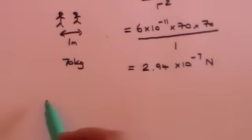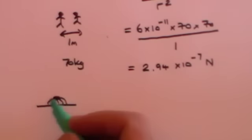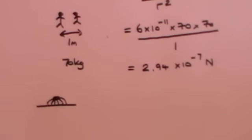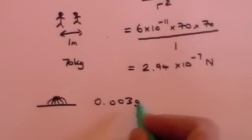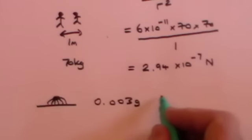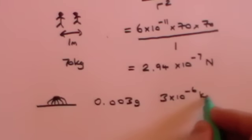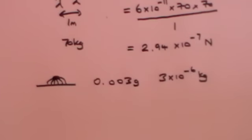I want you to think about an ant on the Earth. Here's my ant standing on the surface of the Earth — better give it six legs. An ant weighs about 0.003 grams. That's the mass of an ant, or if you like, that's 3 times 10 to the minus 6 kilograms. What is the force that that ant exerts on the Earth? In other words, what is its weight?